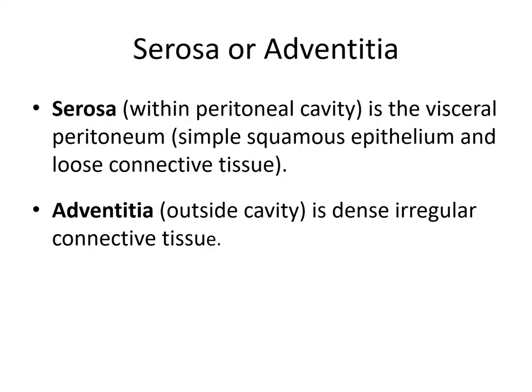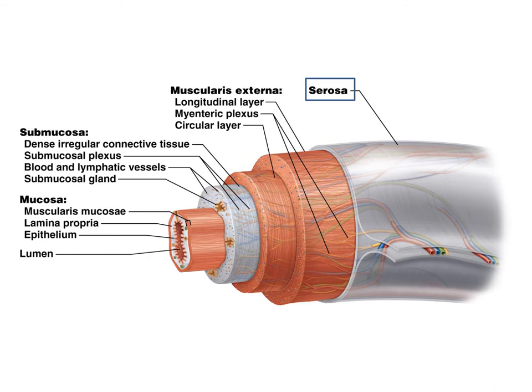The outermost layer can be called either a serosa or adventitia, depending on whether it's within or outside the peritoneal cavity. We call it a serosa if it's within the peritoneal cavity. The serosa is also known as the visceral peritoneum, which is simple squamous epithelium with loose connective tissue. The adventitia is outside the cavity and is composed of dense irregular connective tissue. Different organs will have either a serosa or adventitia depending on their anatomical location.